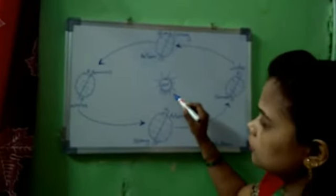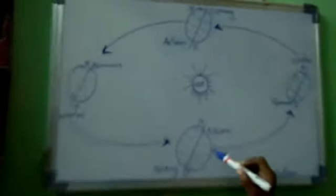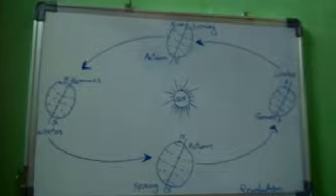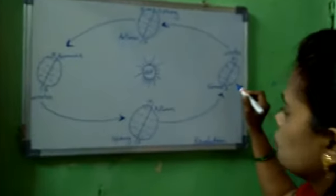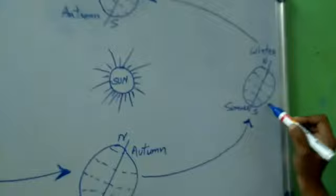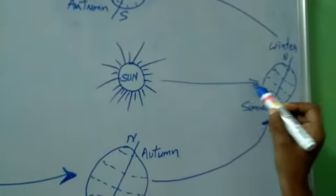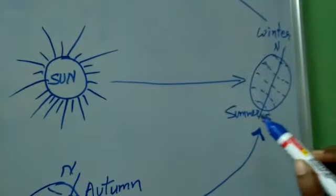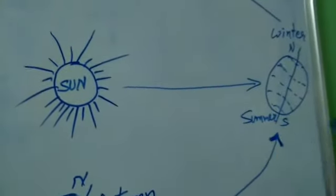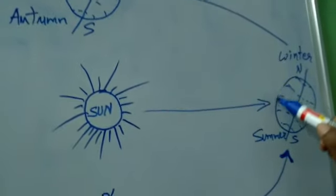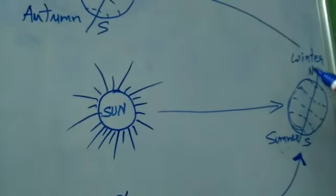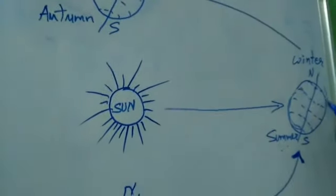Our sun is in the middle and our Earth is taking a round of the sun on its orbit. When our Earth goes into this position, it is too far from the sun. The northern area is at the back of the sun and the southern part is in the front. So this southern part is nearer to the sun — that's why summer season is here and winter season is on the northern side.